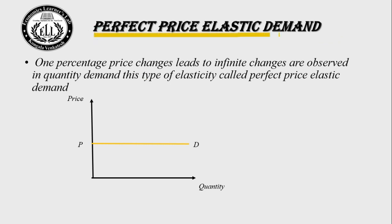Perfect price elastic demand: A 1% price change leads to an infinite change observed in quantity demanded. This type is called perfect price elastic demand. In perfect price elasticity, the demand curve is horizontal. When there is a 1% increase in price, there will be an infinite change in demand.